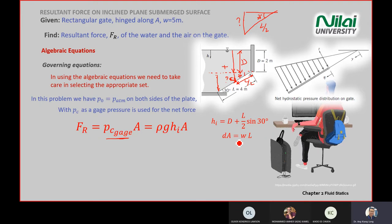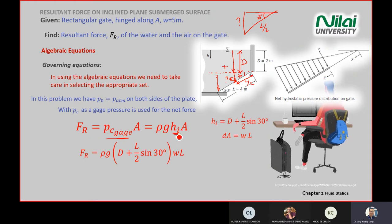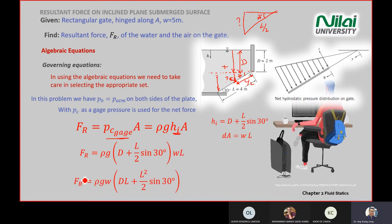Again, you use a sine relationship to find the question mark length here. So your h_bar equals D plus L divided by 2 sine 30 degree. And then recall your area is W times L. So the rest is substitution. So FR equals rho g h_bar A. You substitute your h_bar term with D plus L divided by 2 sine 30 degree times the A, A is the width times the length.